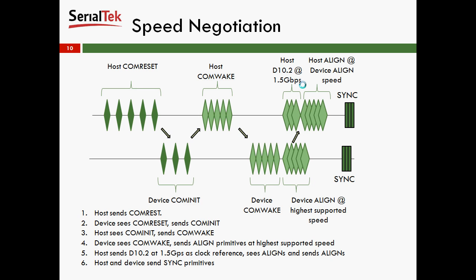Here's a quick diagram of what speed negotiation looks like. You'll see that the host sends out a COMRESET. The device sees the COMRESET and sends a COMINIT. The host sees the COMINIT and sends a COMWAKE to wake up the physical layer. The device sees the COMWAKE and sends its own COMWAKE. Then the host and device start sending different types of patterns. The host starts sending D10.2 symbols at 1.5 gigabits per second, and the device starts sending aligns at its highest supported speed. Once the host sees the aligns, it sends aligns itself, and at the end, they send syncs to signify their clocks and data rates are in sync.